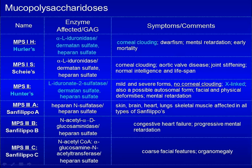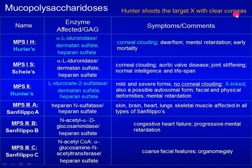To make it easy, we have a mnemonic: 'Hunter hits the target X with clear corneas.' This describes Hunter as an X-linked disease without corneal clouding.